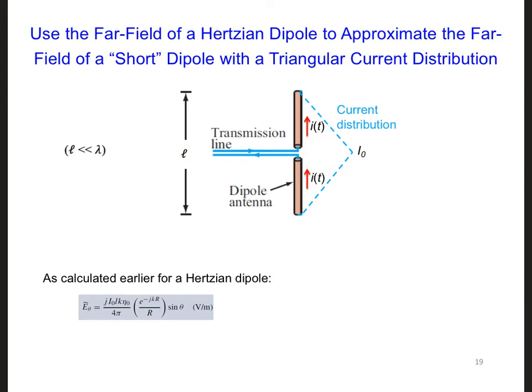Let's stick with a dipole antenna for now, but consider a slightly longer and more physically realizable dipole. In this case, the dipole is still electrically short, but we'll consider a more realistic current distribution, a triangular current distribution, drawn out here.